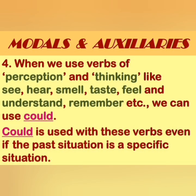The negative is formed by adding 'n't' or 'not' after the modal. For verbs of perception and thinking — see, hear, smell, taste, feel, understand, and remember — we can use 'could.' While referring to permission which one had in the past, we use 'could' or 'was/were allowed to.' For example, 'When I was 10, I could go to school on a bicycle' — 'could' represents permission already obtained in the past.